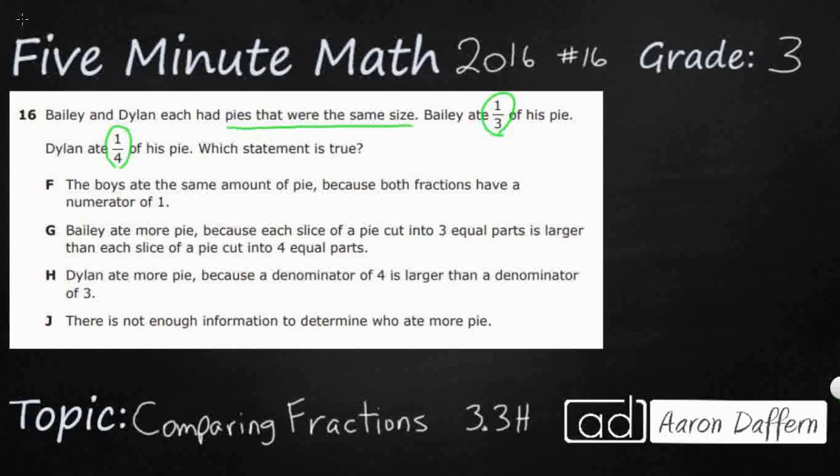If the pies were different sizes, we wouldn't be able to compare them fairly because if Bailey's pie was twice as big as Dylan's, then he might have a smaller fraction but still a bigger piece because his pie is that much bigger. But since they're the same size, we can go ahead and compare these. Really we're just looking at one-third and one-fourth.